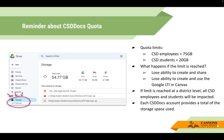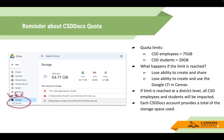What that means is that if that limit is reached by an individual, you will find that you lose the ability to create and share documents. If you're a teacher that uses the Google LTI in Canvas, you'll lose the ability to use that. Same for students — if they reach their limit, they lose the ability to create and share, and even if a teacher has a Google LTI assignment, students won't be able to access that.